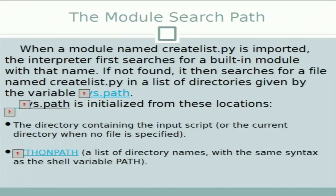The module search path: when a module 'createlist.py' is imported, the interpreter first searches for a built-in module with that name. If not found, it searches for a file 'createlist.py' in directories given by the variable 'sys.path'. The system path includes the directory containing the script, and the PYTHONPATH environment variable, which is similar to the shell PATH variable.